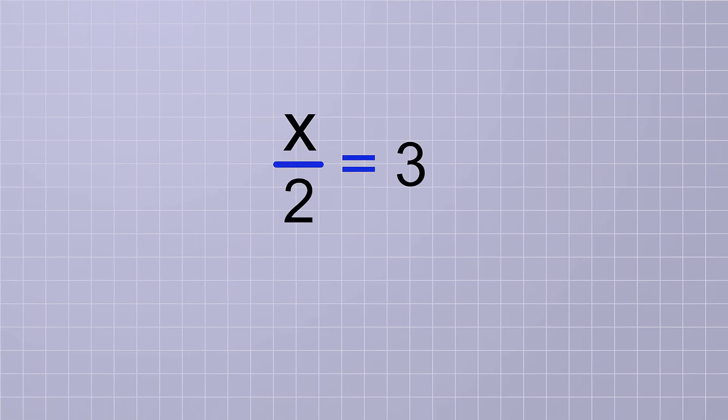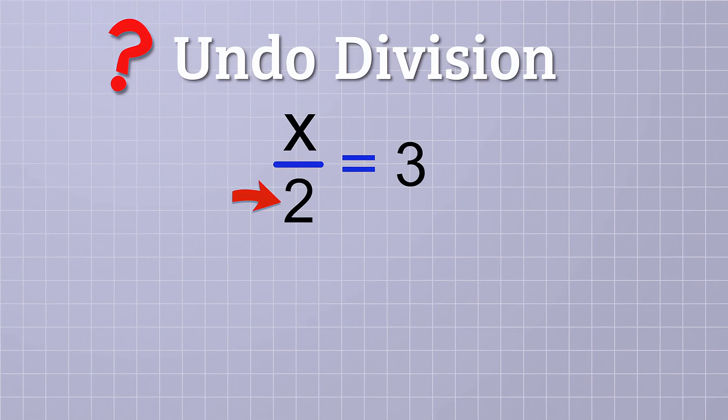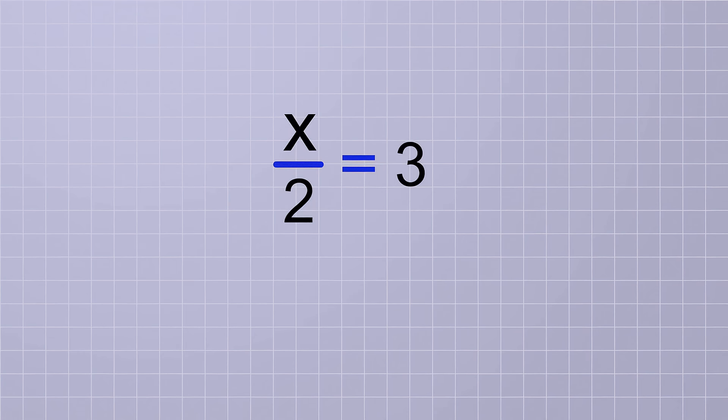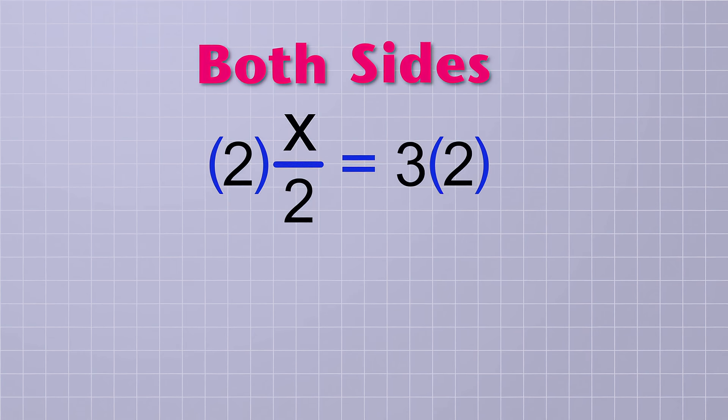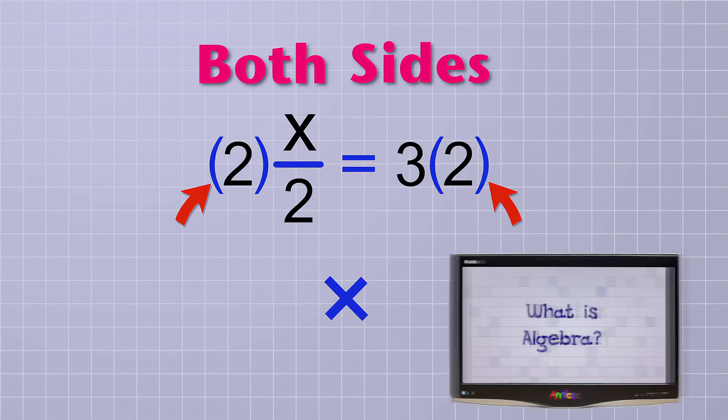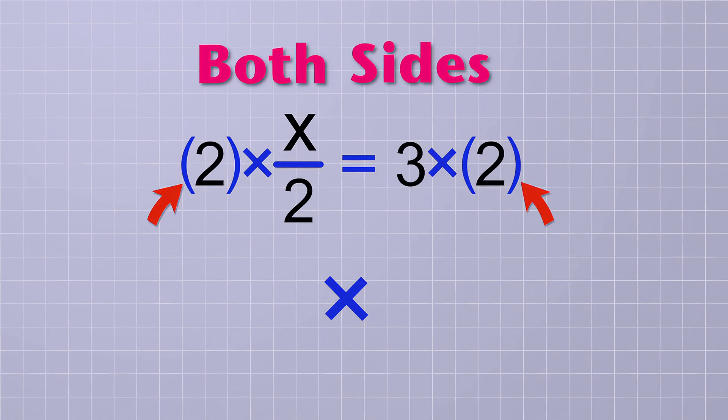Now that we have it rewritten, let's solve it. We can see that the unknown is not by itself because it's being divided by 2. How can we get rid of, or undo, that division? Yup, we can undo division with multiplication. So we need to multiply both sides of the equation by 2. Instead of writing the multiplication sign, I'm using the parentheses notation that we learned about in the video called What is Algebra. Remember? The multiplication is just implied.